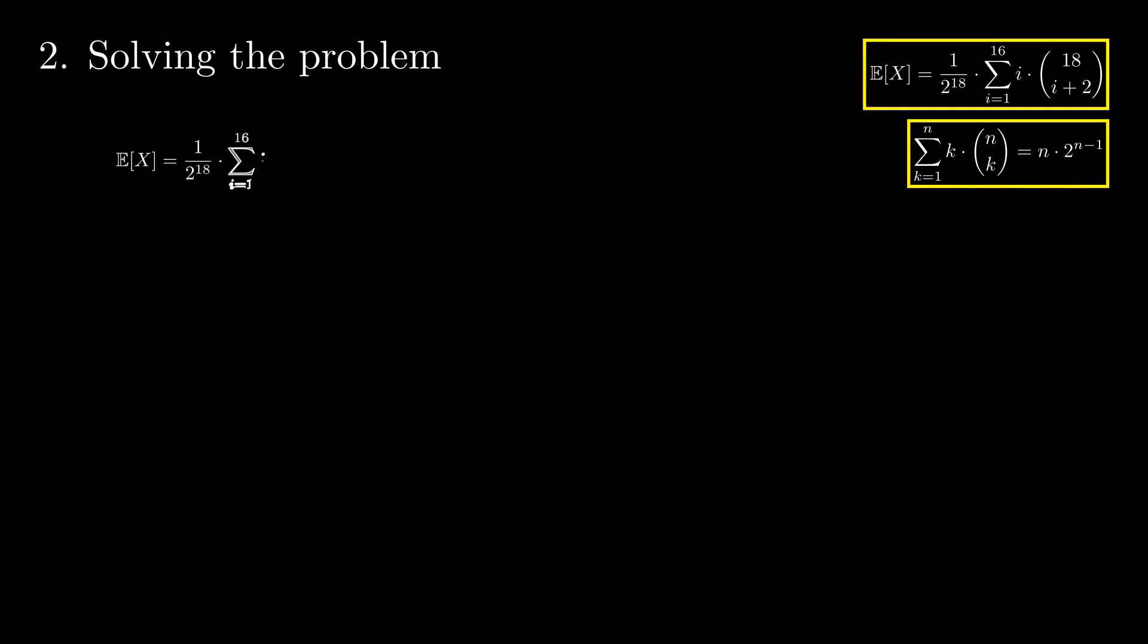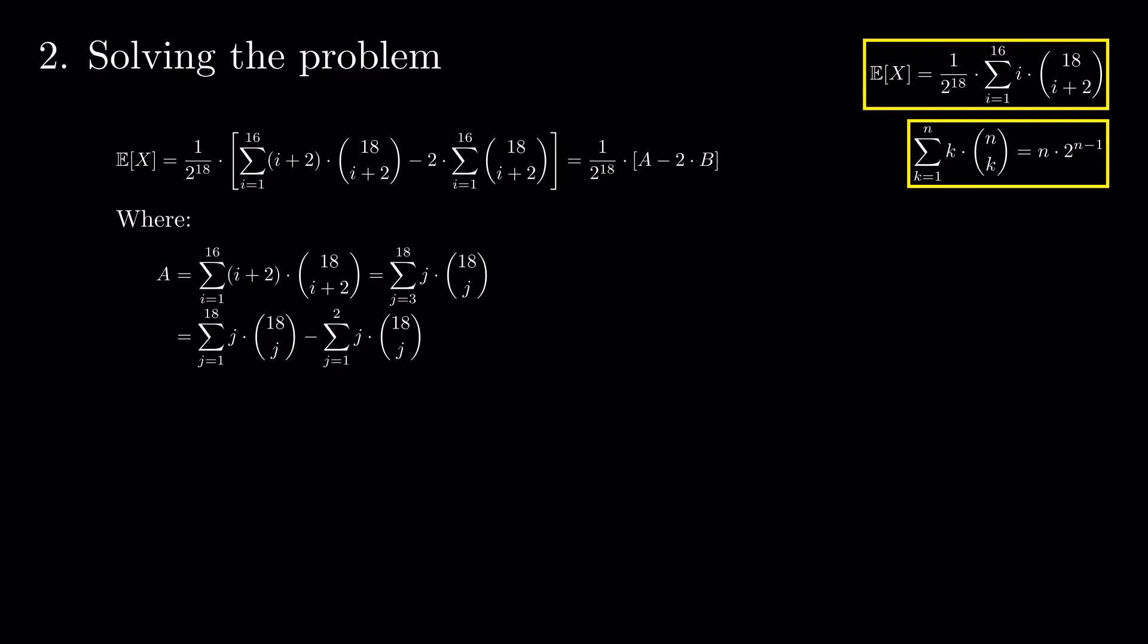Going back to the expectation, we write i as i plus 2 minus 2 and distribute the two terms. Now, we want to separate everything into two easier to compute parts. To compute a, we first rewrite the sum by replacing i plus 2 with j and then expanding it to the formula we derived earlier and applying it.